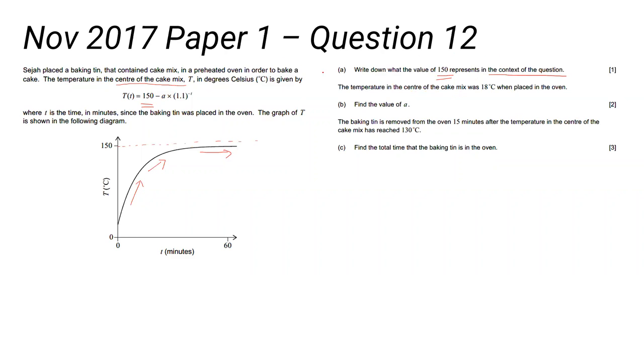Okay. The temperature in the center of the cake mix was 18 degrees when placed in the oven. Find the value of a. Well, that means it was 18 degrees there—that means you have the value 0, 18.